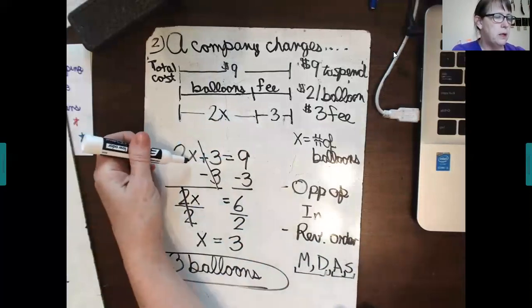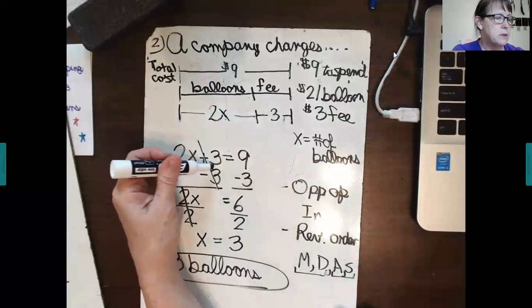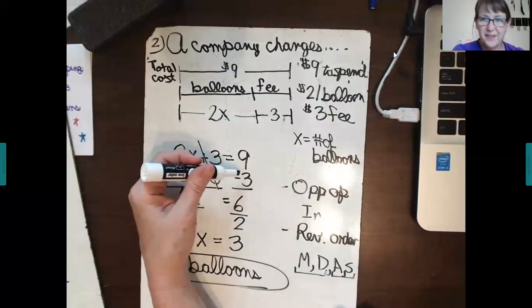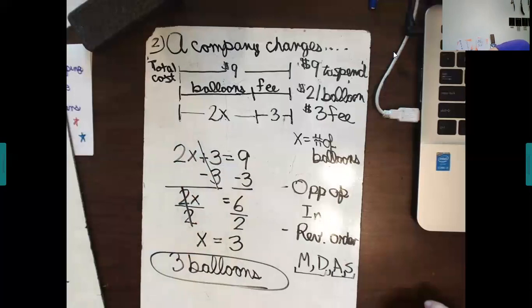And we have a solution. Now, you can go back and check it. 2 times 3 is 6 plus 3. Does that equal 9? Yes, it does. Very good. Okay.